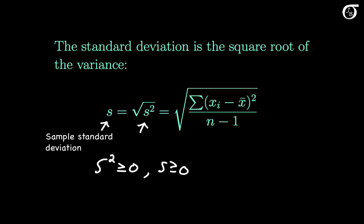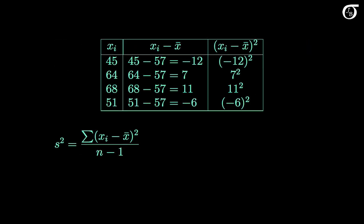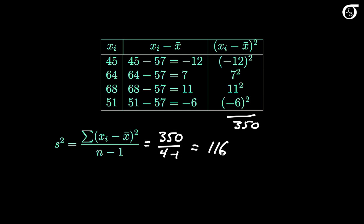Let's go back to our data. Here are the deviations and the squared deviations. The variance formula tells us to square the deviations, sum them, and divide by n−1. The squared deviations sum to 350, so the variance equals 350 ÷ (4−1), which works out to 116.6̄. The standard deviation s is the square root of 116.6̄, which rounds to 10.8.